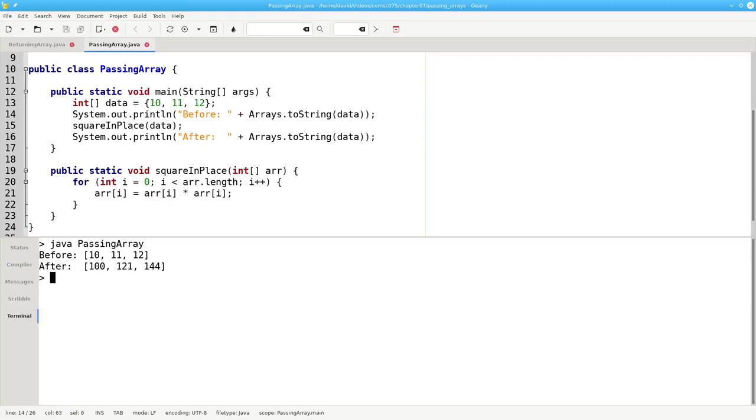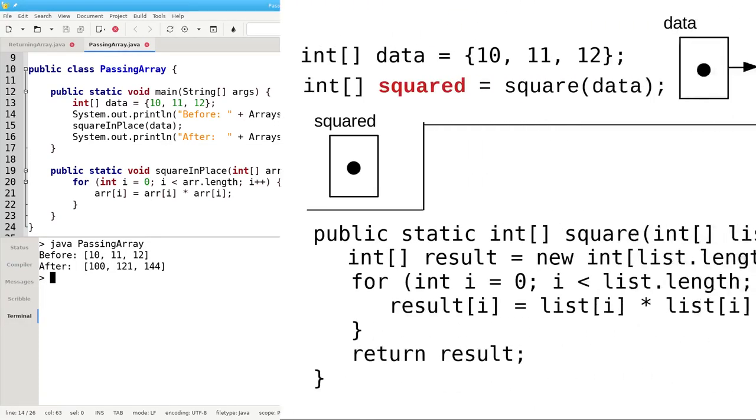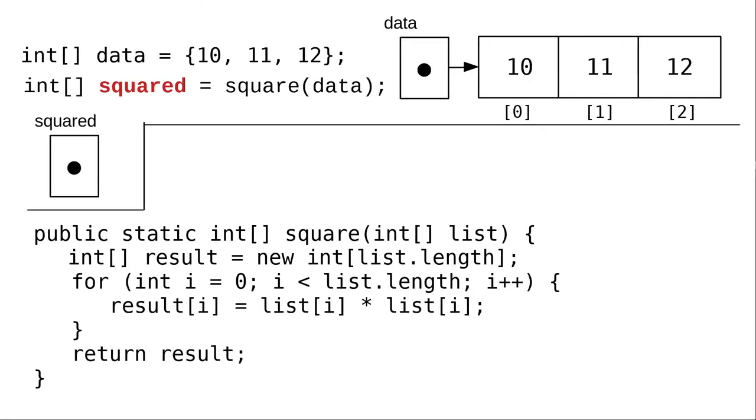There's a school of thought that says you should not change an array that is passed to a function, but instead you should return a new array. Here's how that would work.